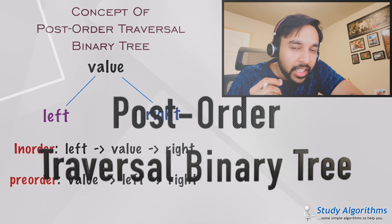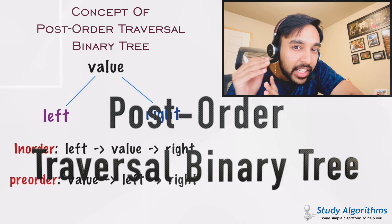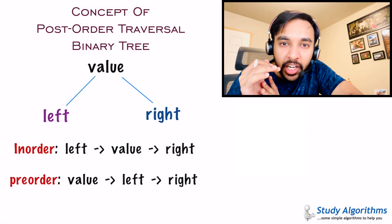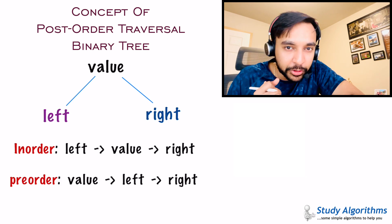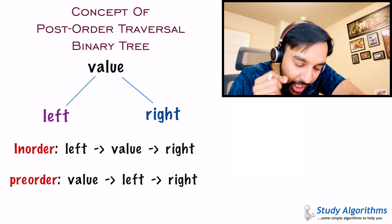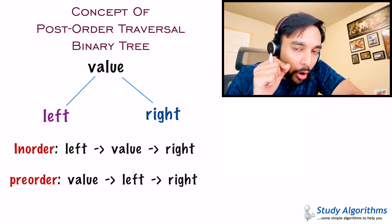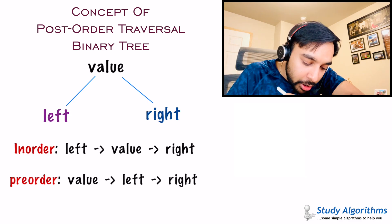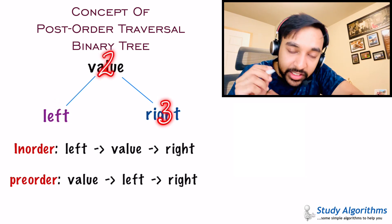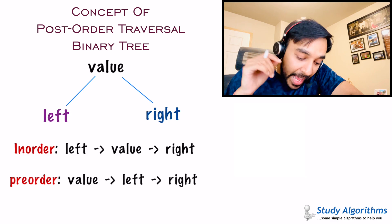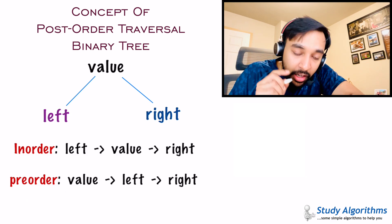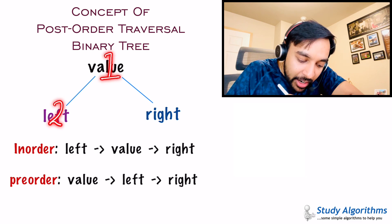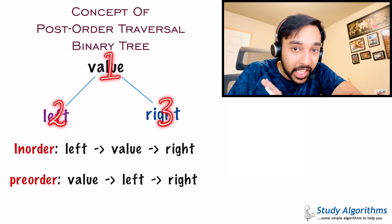Before we start understanding the post-order traversal, let us do a quick recap about the in-order and pre-order. In an in-order traversal, the order of operations is: first you look at the left subtree, then the value, and then the right subtree. And in a pre-order traversal, the order is: first you look at the value, then the left child, and then the right child.